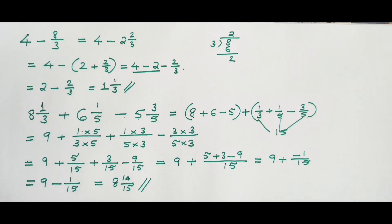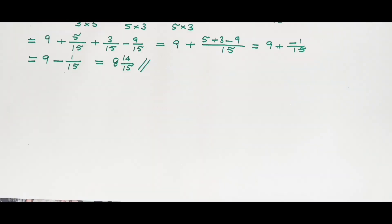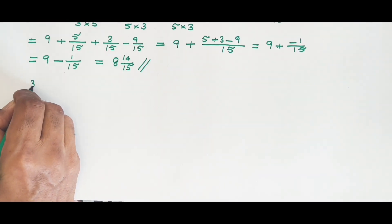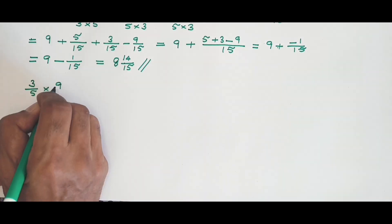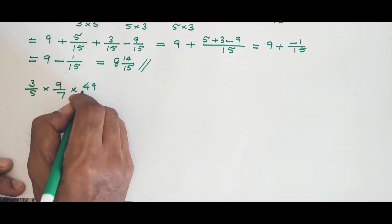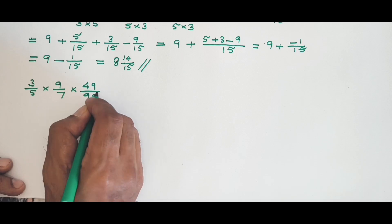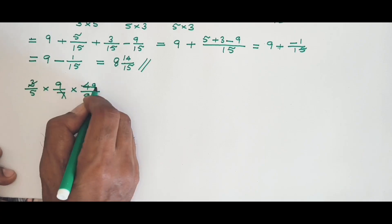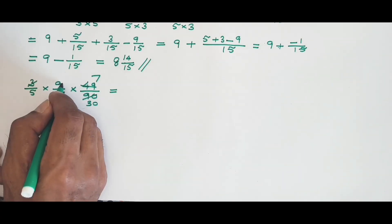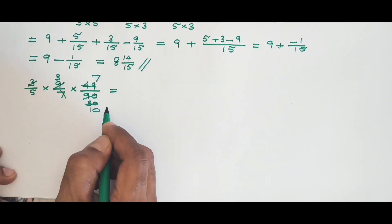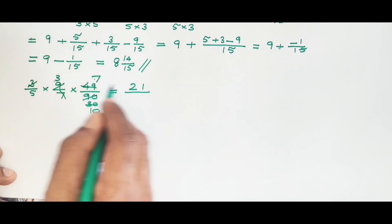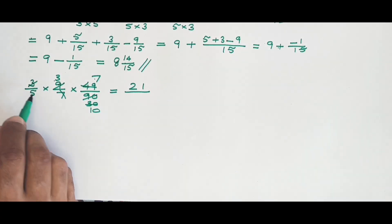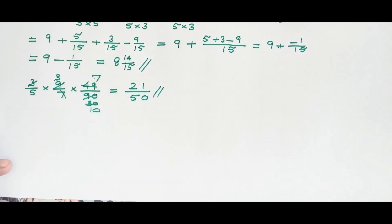So far we've covered addition and subtraction. Let's move to multiplication and division. Look at: 3 over 5 multiplied by 9 over 7 multiplied by 49 over 90. Cancel common factors — 3 goes into 90 thirty times, 7 goes into 49 seven times, leaving 3 multiplied by 7 in the numerator and 5 multiplied by 10 in the denominator — which gives 21 over 50.